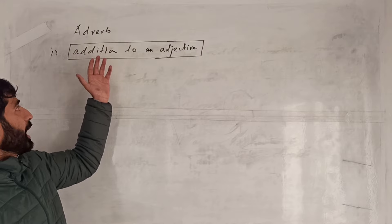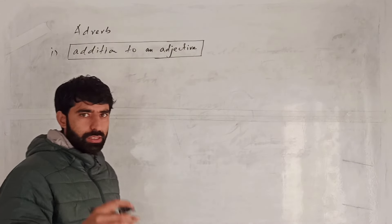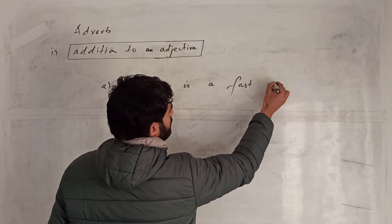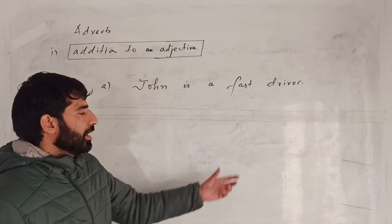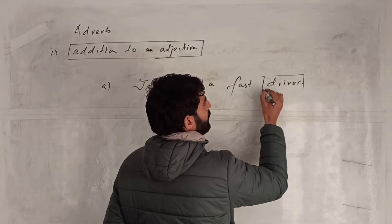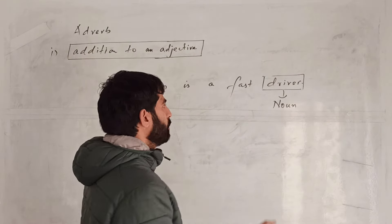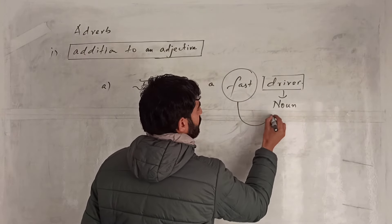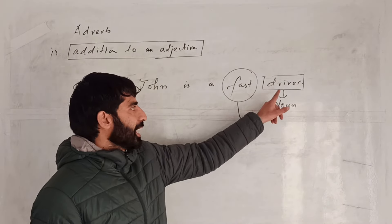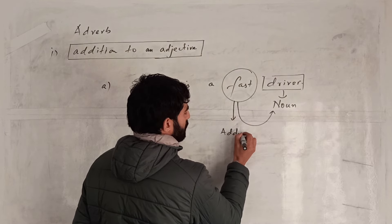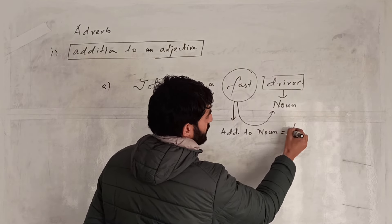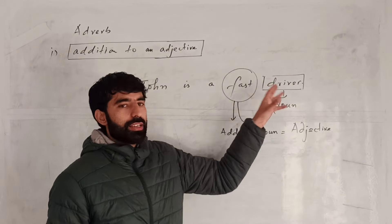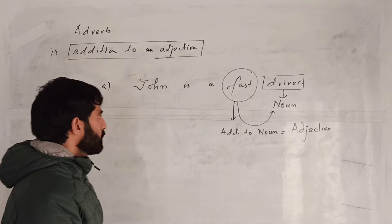In the same way, an adverb can be an addition to an adjective. Consider: 'John is a fast driver.' Here, driver is a noun, and fast attaches itself to the noun driver, so fast is an adjective. Now in sentence B: 'John is a very fast driver.' Driver is noun, fast is adjective, and very is an addition to fast.